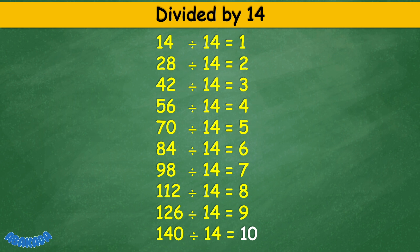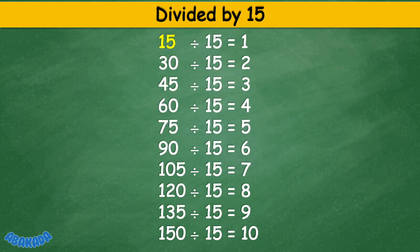Divided by 15: 15 divided by 15 equals 1, 30 divided by 15 equals 2, 45 divided by 15 equals 3, 60 divided by 15 equals 4, 75 divided by 15 equals 5, 90 divided by 15 equals 6, 105 divided by 15 equals 7, 120 divided by 15 equals 8, 135 divided by 15 equals 9, 150 divided by 15 equals 10.